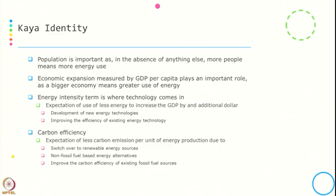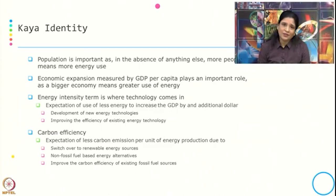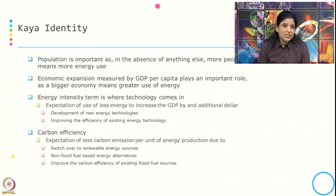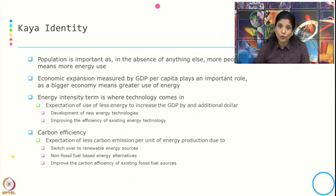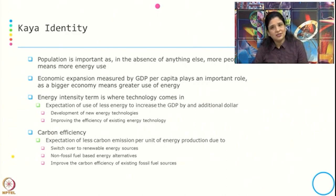The energy intensity term captures technology — the expectation is to use less energy to increase GDP by an additional dollar. Why is it expected that we will use less energy? Because new energy technology will be developed in the form of energy efficiency, requiring less energy to produce products, and there will also be improvement in the efficiency of existing energy technology. The last term, carbon efficiency, captures the expectation that there will be less carbon emission per unit of energy production due to a switch to renewable energy sources, which are non-fossil coal-based energy alternatives, and improvements in the carbon efficiency of existing fossil fuel sources.